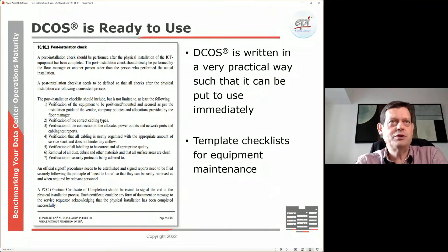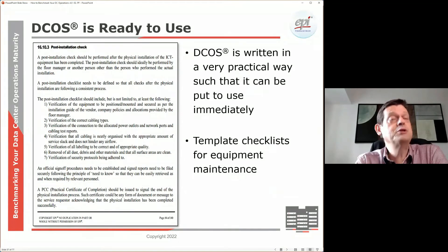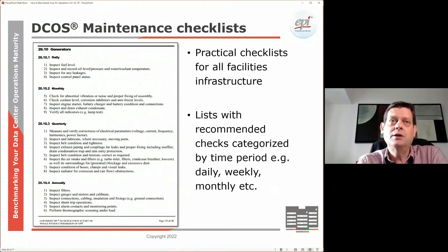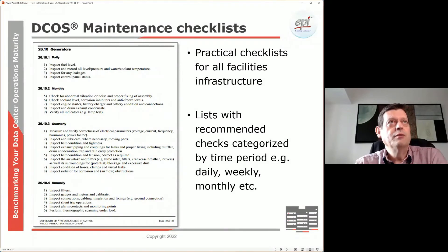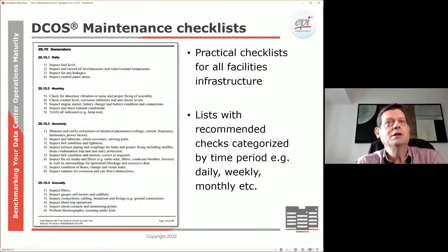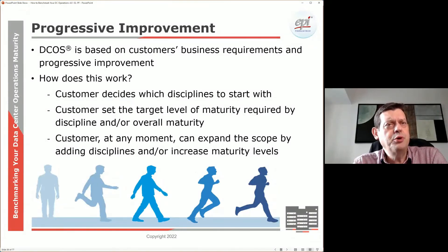Here you can see a quick copy of a page from the standard. The descriptions are not mysterious — they tell you in very clear terms what you need to do and how to do it. It doesn't mean you can't vary from a particular part; if you have another way of doing it that still establishes the intent of a requirement, that's perfectly fine. DCOS also includes a lot of checklists — for example, covering how to maintain your generator, UPS, etc.